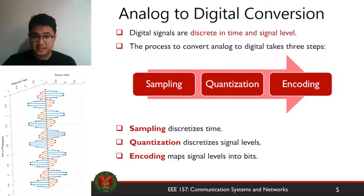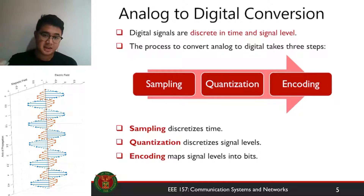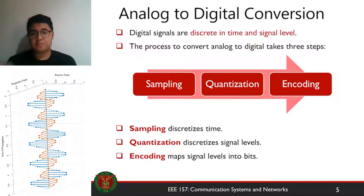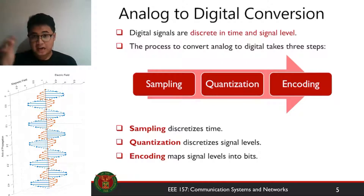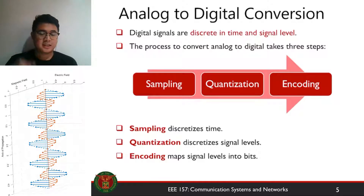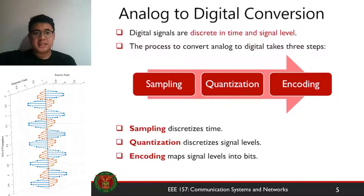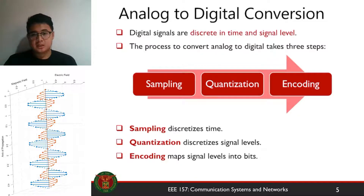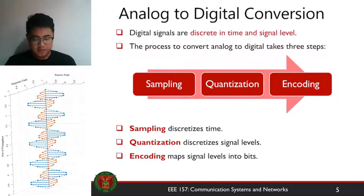To summarize the three steps: sampling first — it discretizes time. Then quantization — it discretizes the signal level. Finally, encoding — you map your different signal levels into bits. The output of your analog-to-digital conversion will always be a sequence of bits, which is fed into the modulator. The modulator converts it into something that can be transmitted over a channel. We'll focus on these three steps in this lecture.